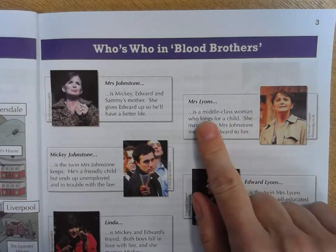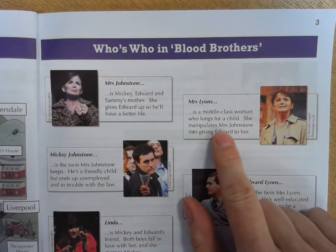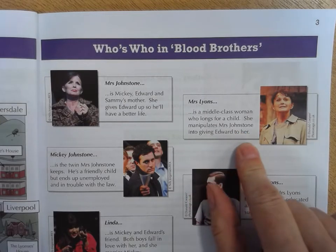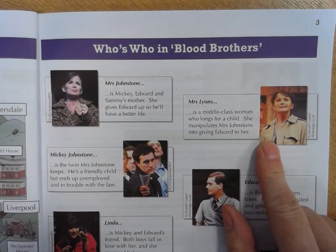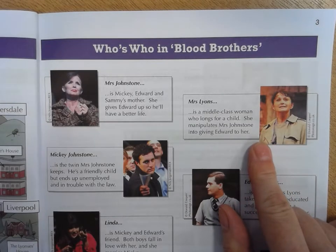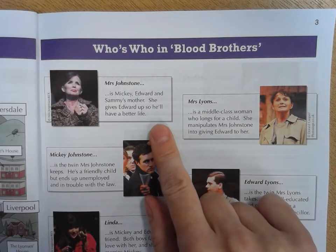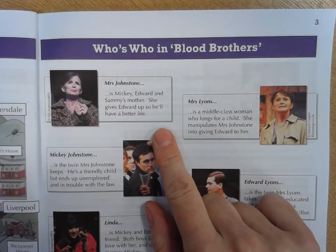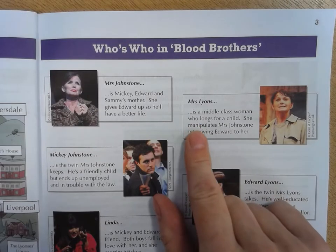Mrs. Lyons is a middle class woman who longs for a child. She manipulates Mrs. Johnstone into giving Edward to her, and we're going to talk later in the series about how she manipulates her — reading Mrs. Johnstone's religion, her superstitions, and her working class status — and uses all of those to manipulate her into giving up one of her babies.